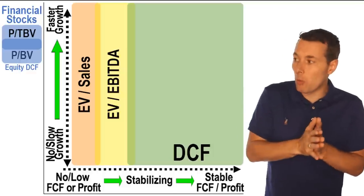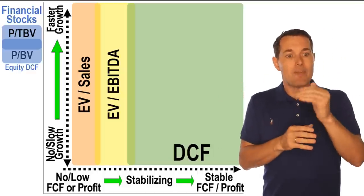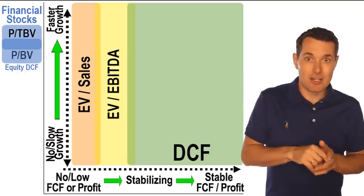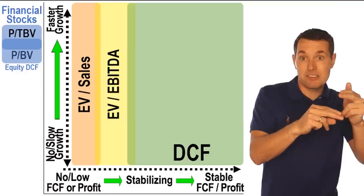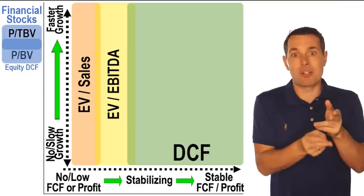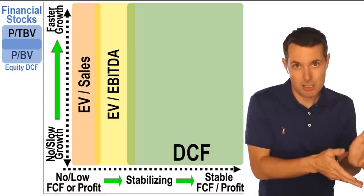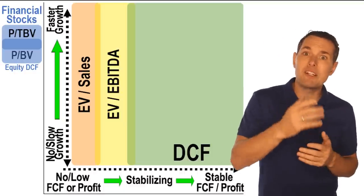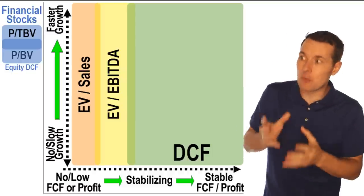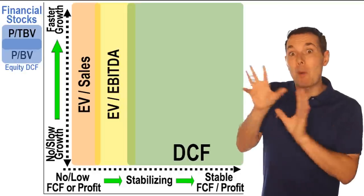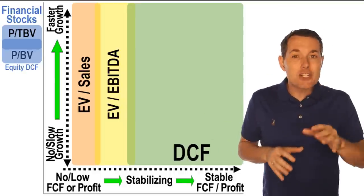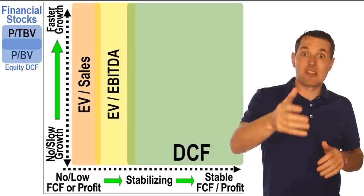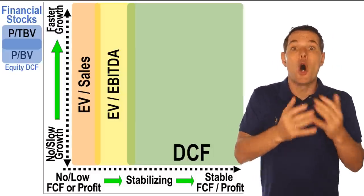We're going to do videos on how to do that valuation method. This is sort of where we're trying to bring the website — if you punch in a ticker, it automatically recognizes it's a financial stock and gives you the price to book value, price to tangible book value, the industry average, their own historical average, where their stock should be trading, and the fair value based on their own history or the industry. We're also going to have it calculate the equity DCF. I'll link a playlist in the description below for the ones we've done so far.